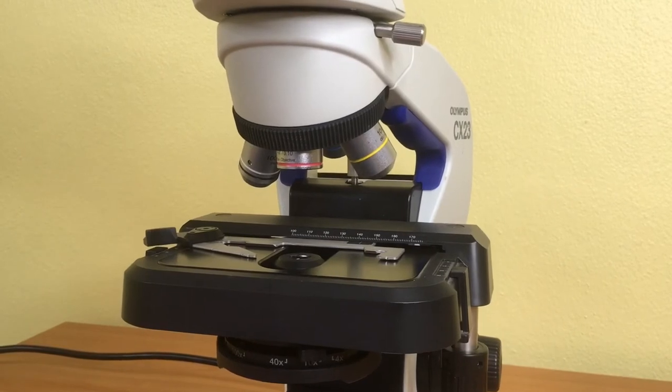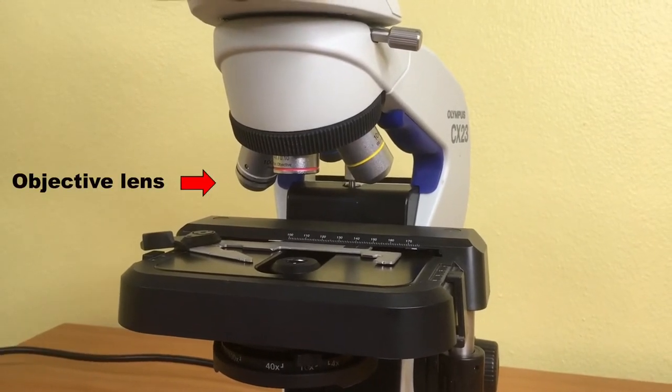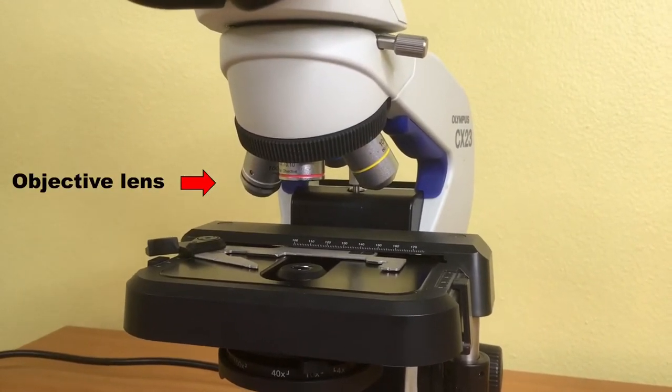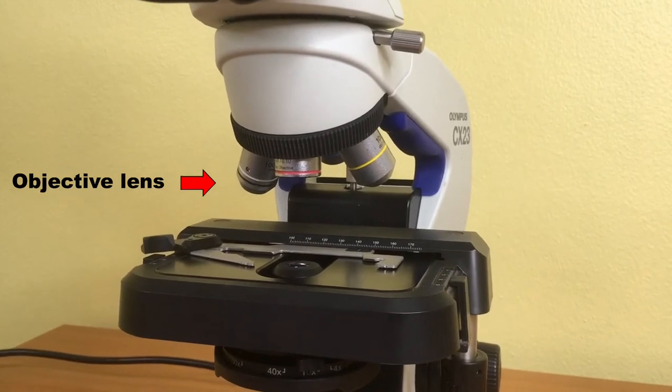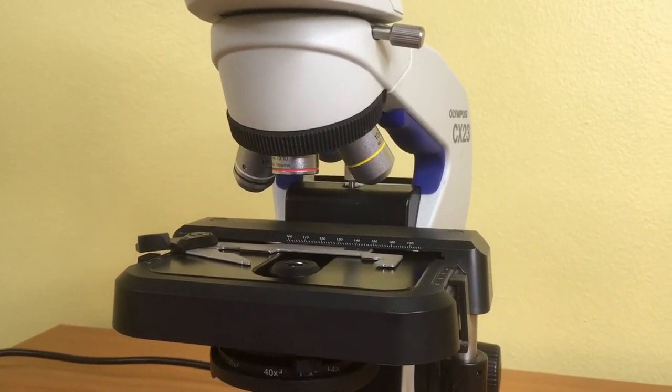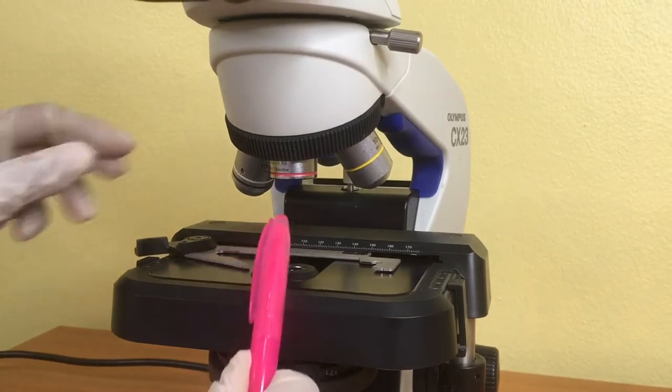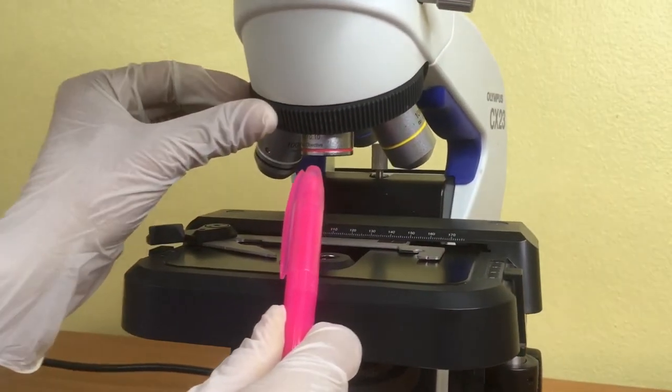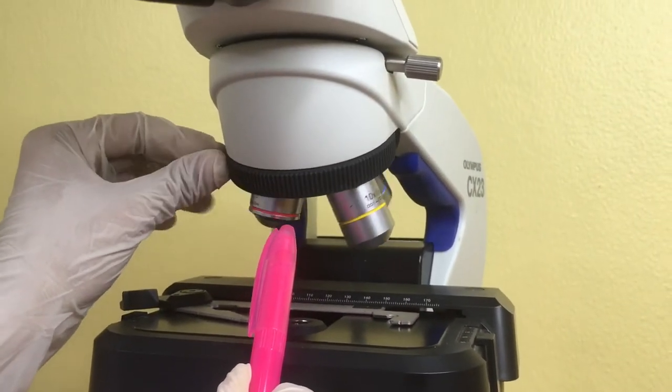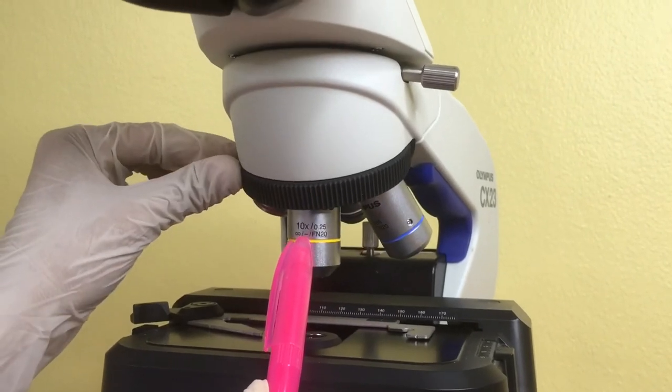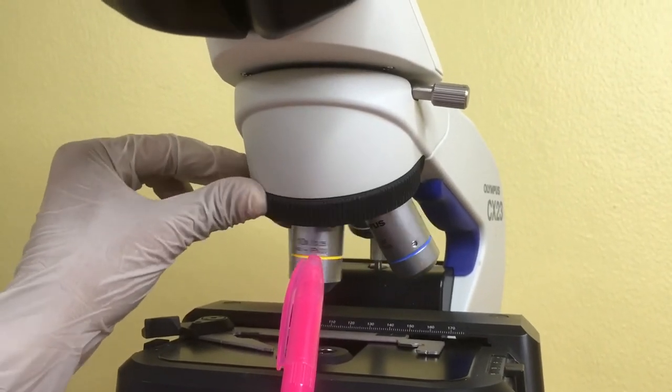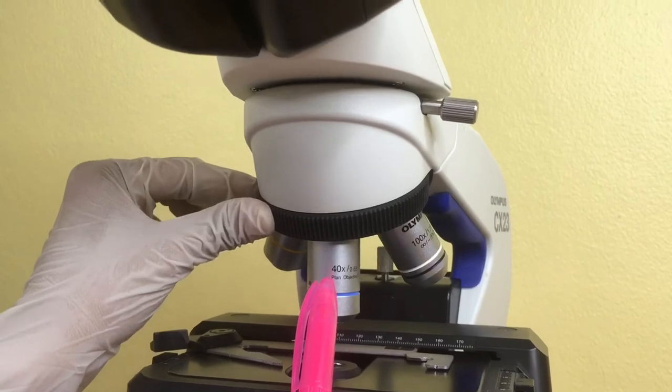Next, the objective lens. The objective lens is a set of lenses closest to the specimen. A standard microscope has 3-4 objective lenses ranging from a low power, a medium power, a high power, and an oil immersion lens.